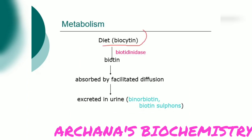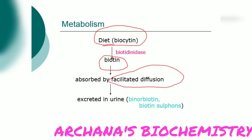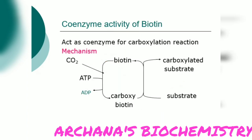Regarding metabolism, one of the three forms is biocytin, which is converted to biotin by the enzyme biotinidase. Biotin is absorbed by facilitated diffusion and is excreted in the urine in the form of biotin sulfones or bisnorbiotin.